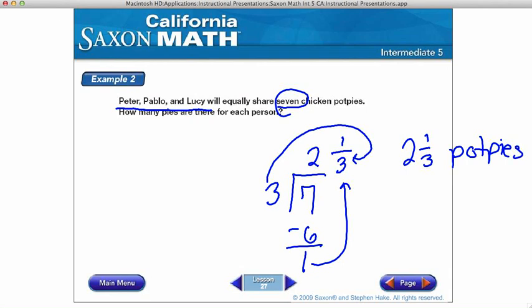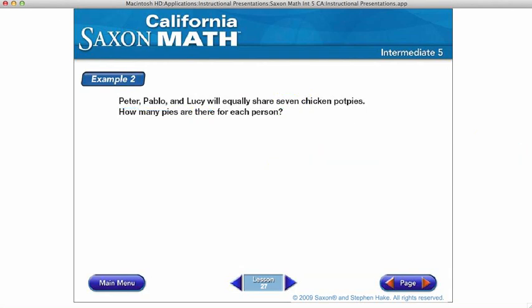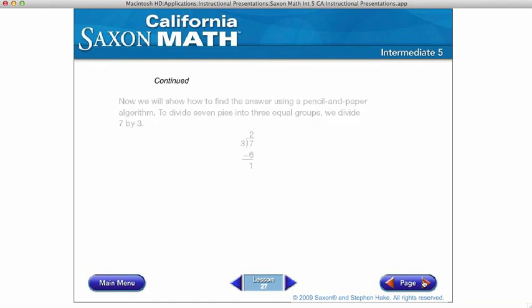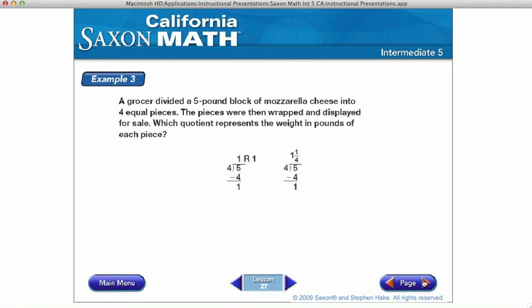Okay, let's look at another example. Example three. A grocer divided a five-pound block of mozzarella cheese into four equal pieces. The pieces were then wrapped and displayed for sale. Which quotient represents the weight in pounds of each piece?